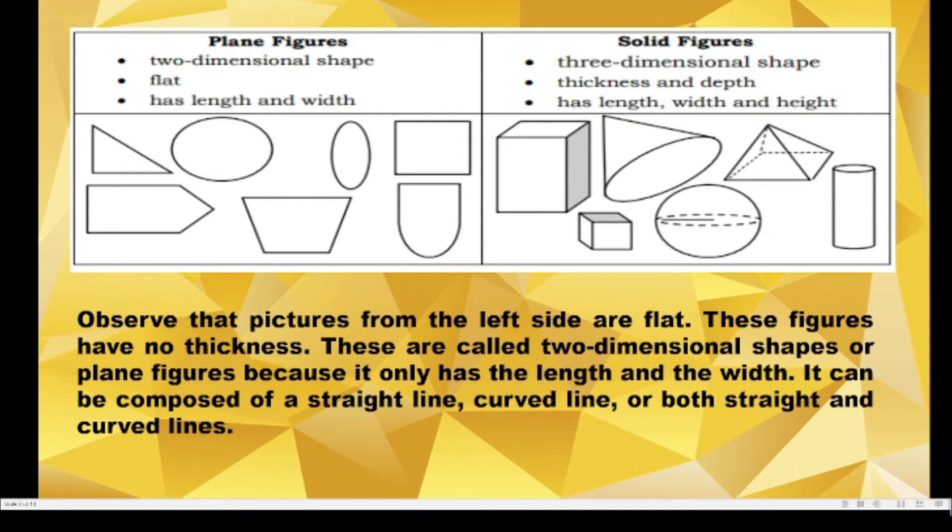Observe that pictures from the left side are flat. These figures have no thickness. These are called two-dimensional shapes or plane figures because it only has the length and the width. It can be composed of straight line, curved line, or both straight and curved lines.